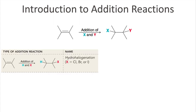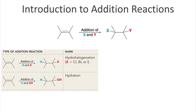We will look at hydrohalogenation reactions where we are adding an H plus X, where X is a halogen — either chlorine, bromine, or iodine. We can also add an H-O-H across that double bond. Since H-O-H is essentially water, that type of reaction is called hydration.